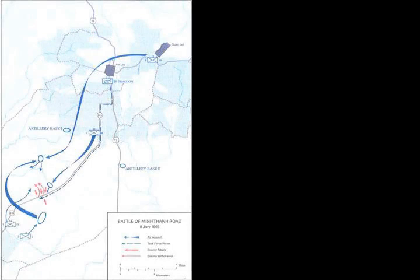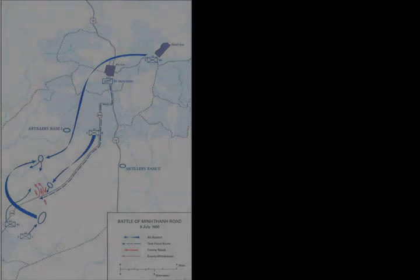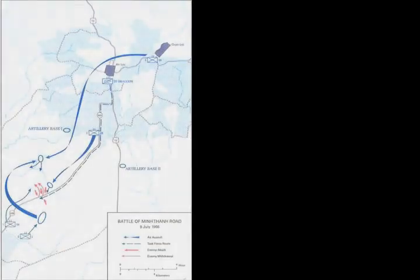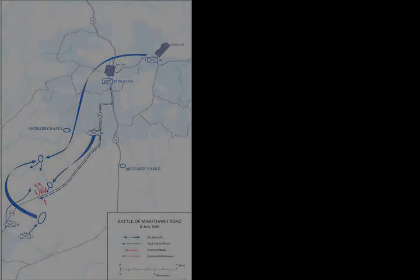The Battle of Min Thanh Road was considered a U.S. victory as the U.S. had lured the VC into attacking a stronger force and then used firepower to inflict serious losses. Total U.S. casualties were 25 killed and 113 wounded, while initial reports claimed Viet Cong losses were 238 killed with a further 300 believed killed, though the bodies were removed.